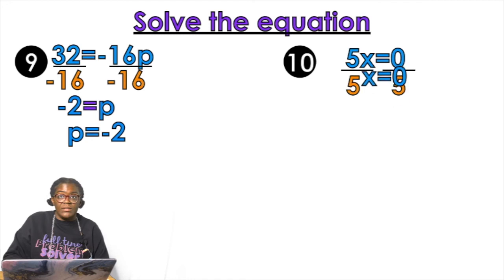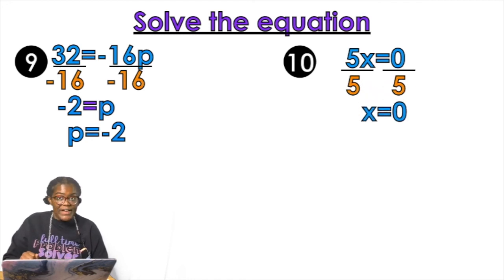Five on both sides. X equals zero. Yes. Zero can be an answer. Zero divided by five is zero. So that is okay.